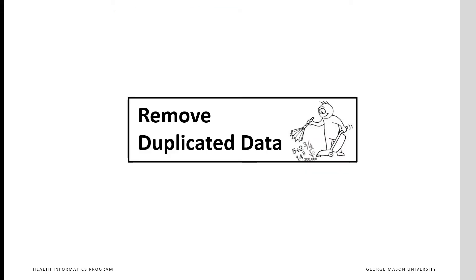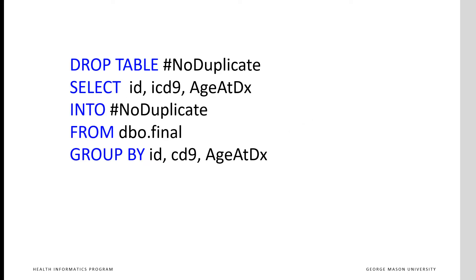We'll begin with the code for removing duplicated data. In this code snippet, we remove duplication for the same person, same diagnosis, reported on exactly the same date. This is done by the GROUP BY command. If there are multiple entries for diagnosis of a patient at a certain age, then only one will be kept.